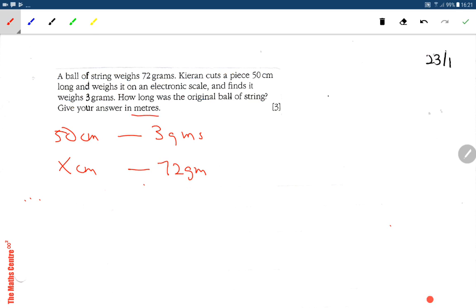I've taught you in my checkpoint course on ratios that you write two lines like this: 50 cm is proportional to 3 grams, x cm is proportional to 72 grams. So cm over cm, x is the unknown, put it on top: x over 50 equals 72 over 3.